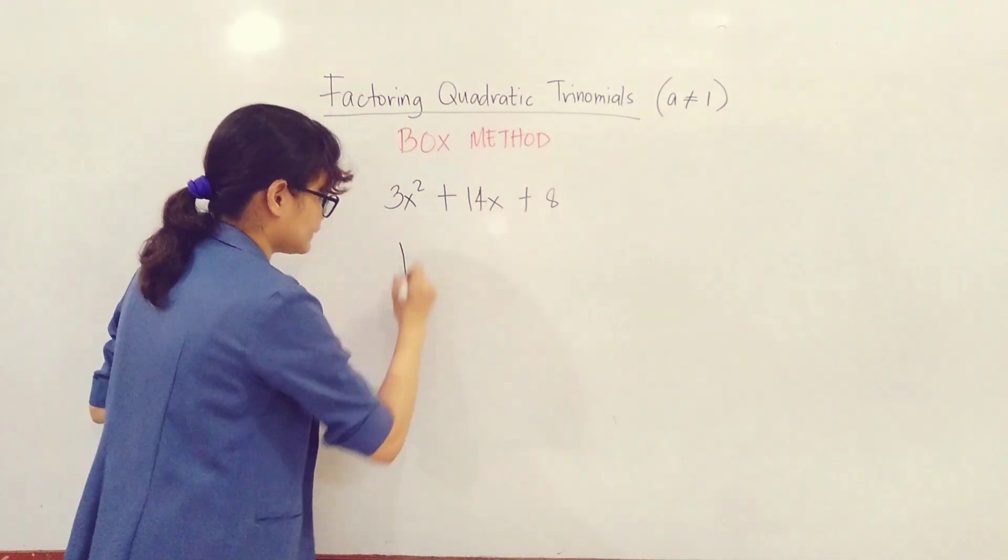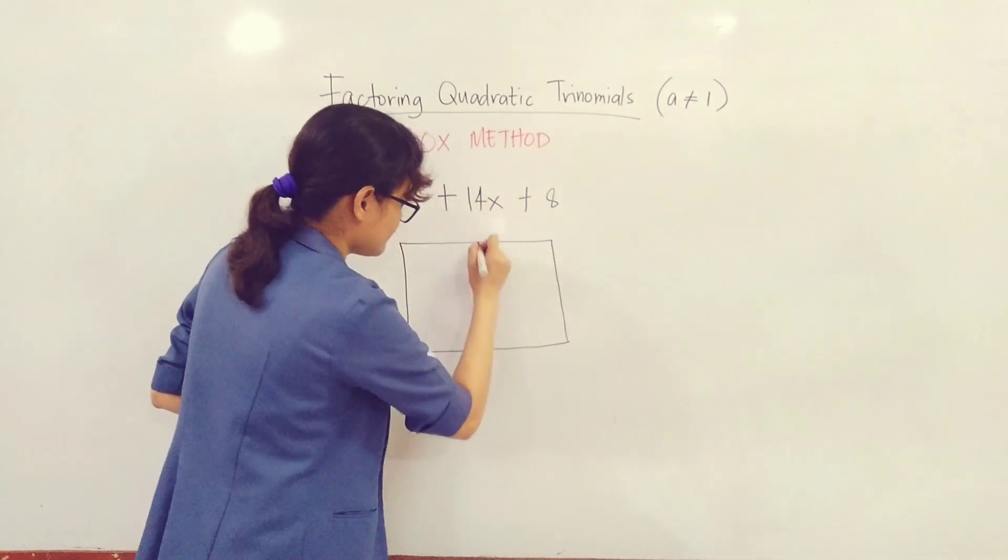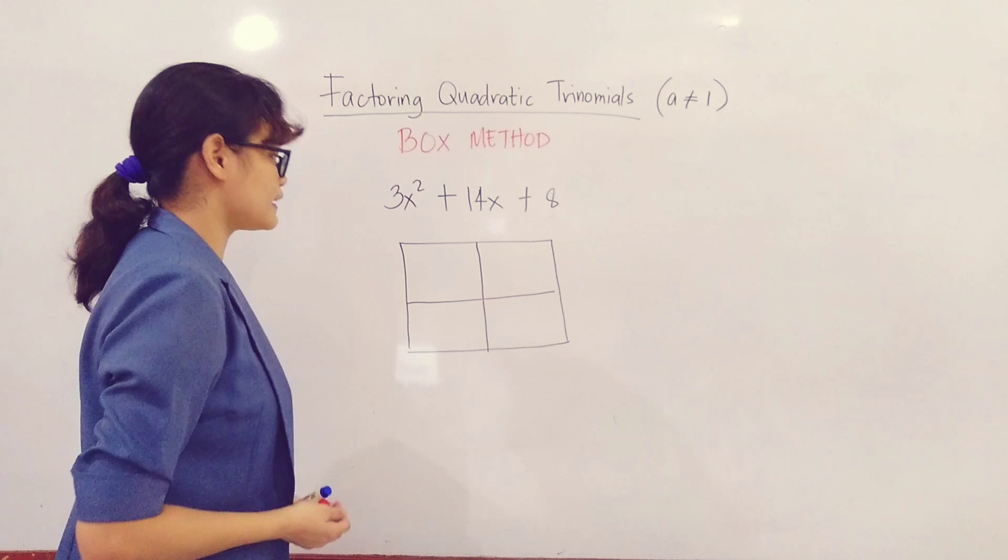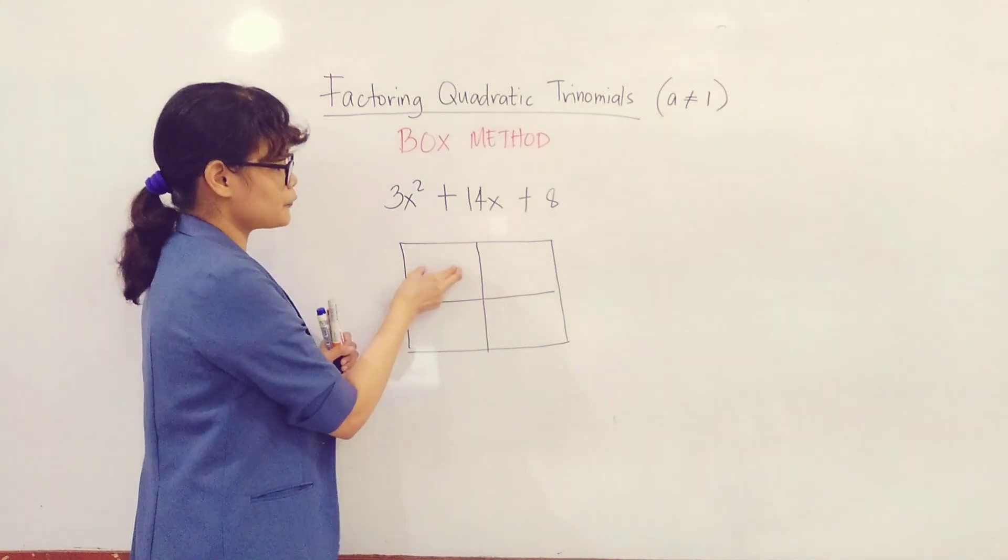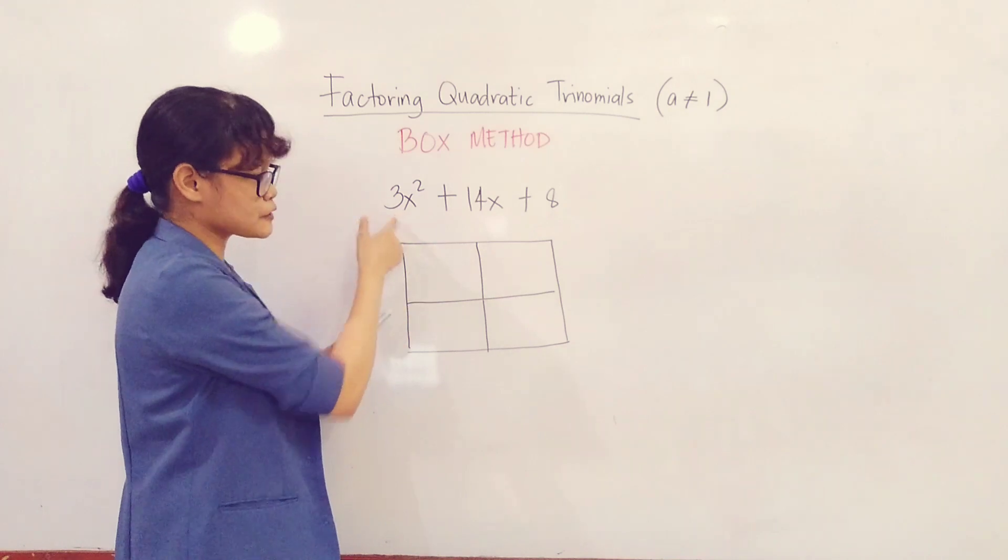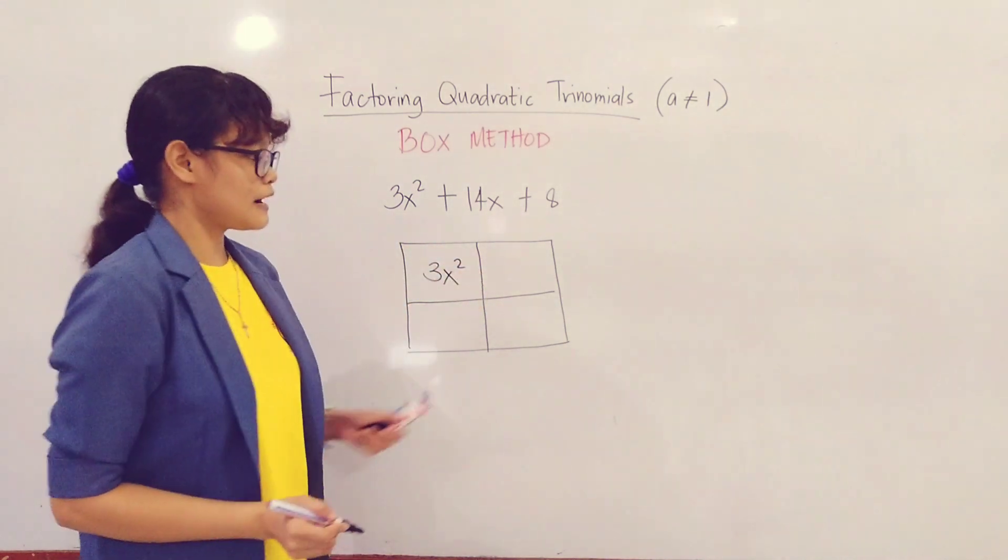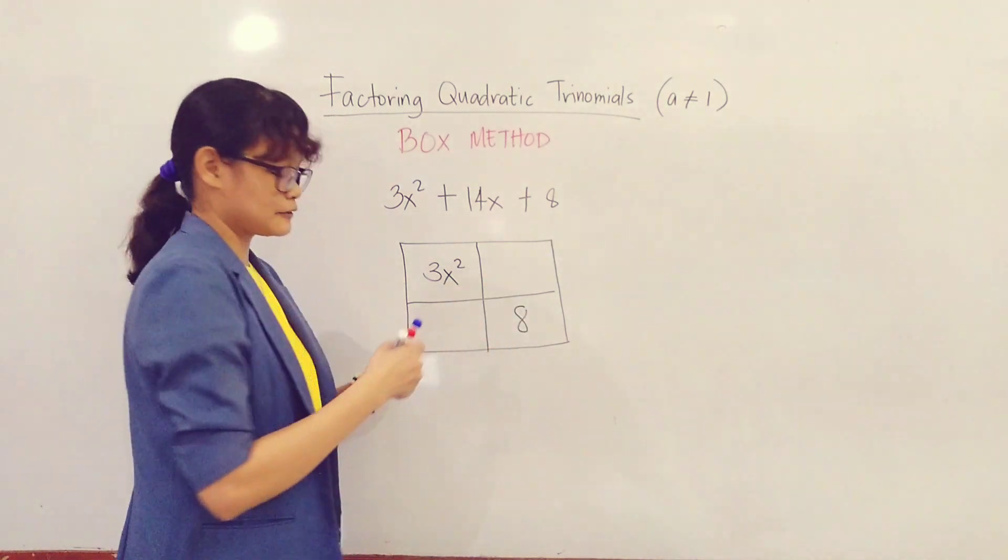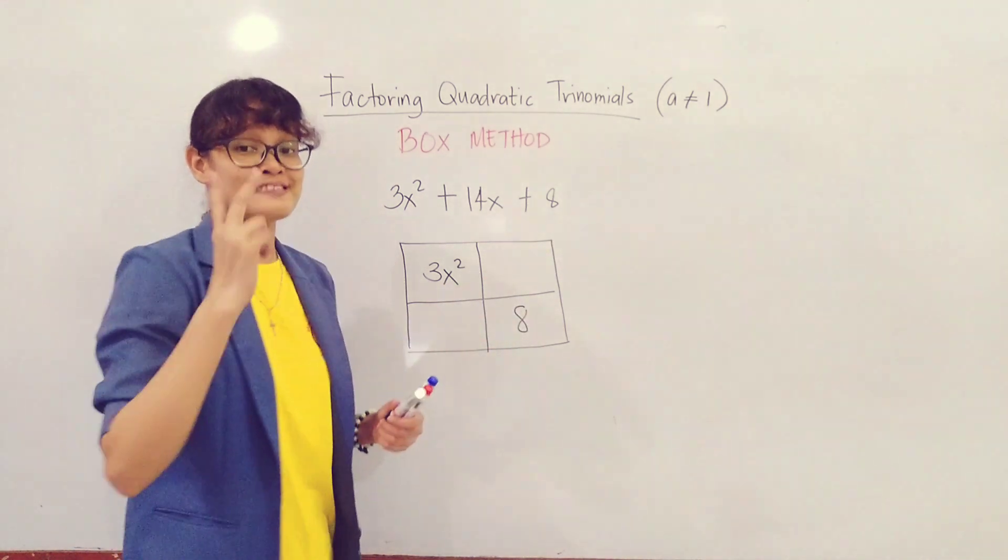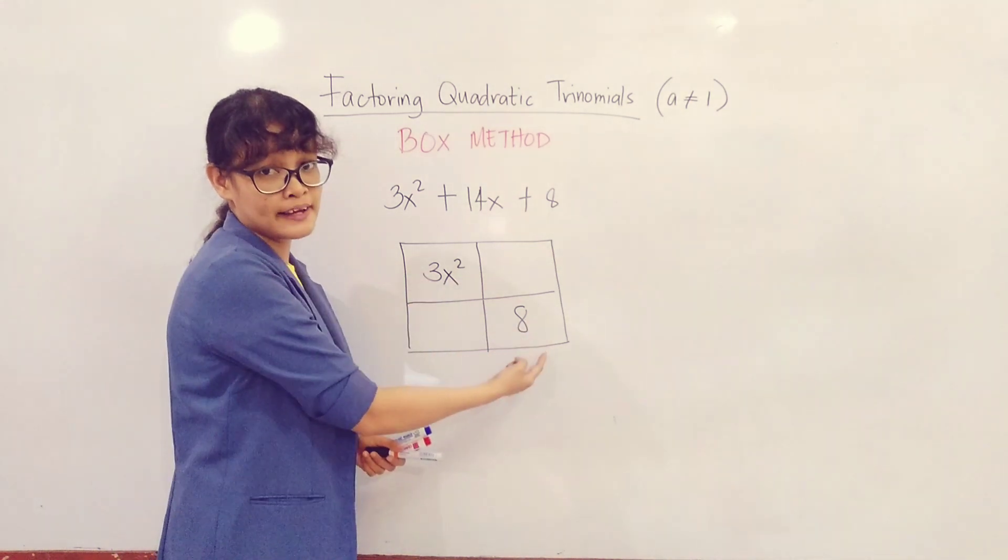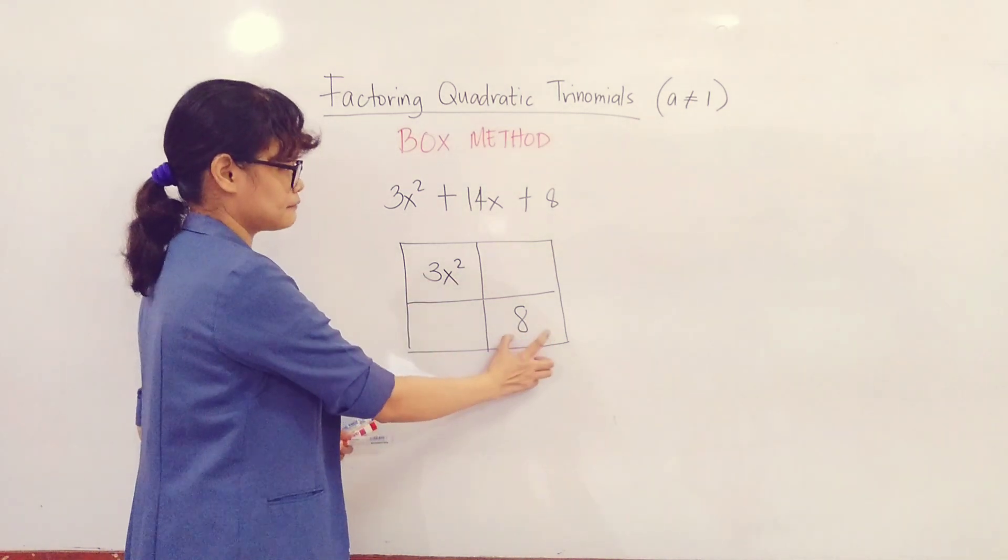After you make a box, we will fill in the first and the last square. So you will place here your first term, which is 3x². Then at the end of your box you will place 8. So first step, make a box. Second step, place the first term here at the beginning and the constant number at the end of the grid.